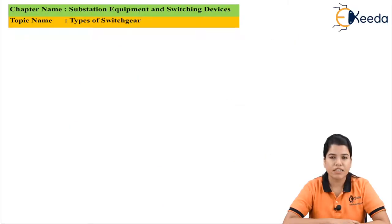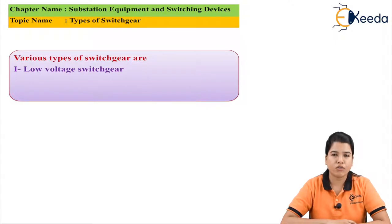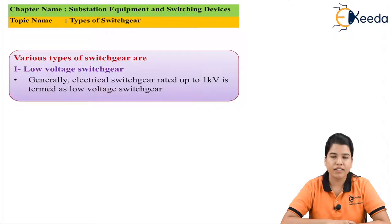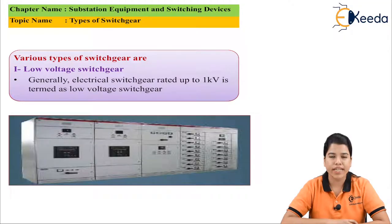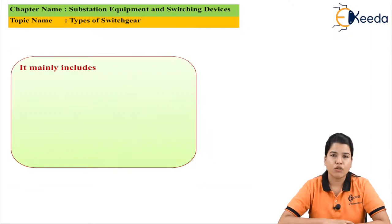Depending upon the system voltage, the switchgear devices are basically classified. First is low voltage switchgear. The electrical switchgear which is rated up to 1 kV is called low voltage switchgear. The diagram shows an example of low voltage switchgear.